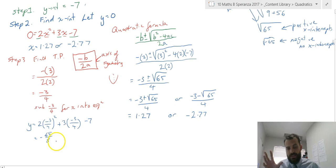That's giving me an answer of negative 65 on 8. So what that means is that our turning point is negative 3 on 4 and negative 65 on 8. Of course, if you want to, we can write that in a different way: negative 0.75 and negative 8.125. Final step here, let's sketch our function.